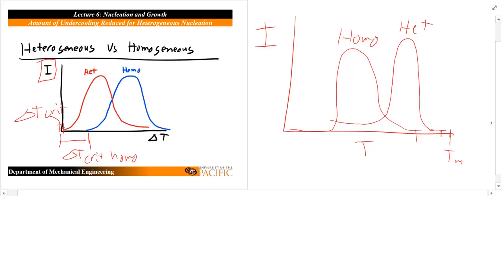So hopefully that makes sense. Key idea, if we have to create less area, we could basically nucleate easier. We lower that activation energy. We don't need as much driving force. That driving force is the lower temperatures, the delta T, and we're good to go.